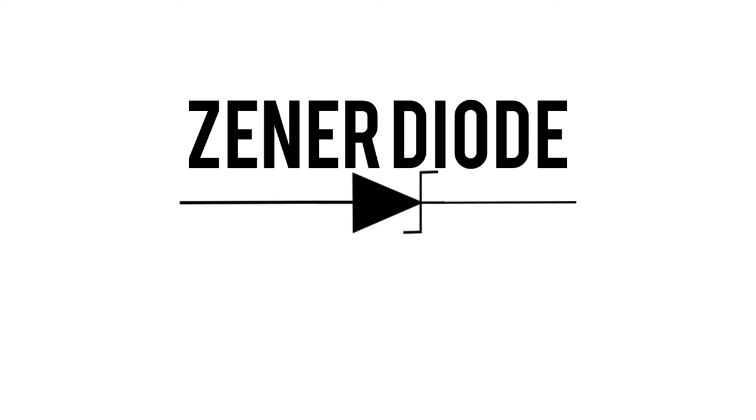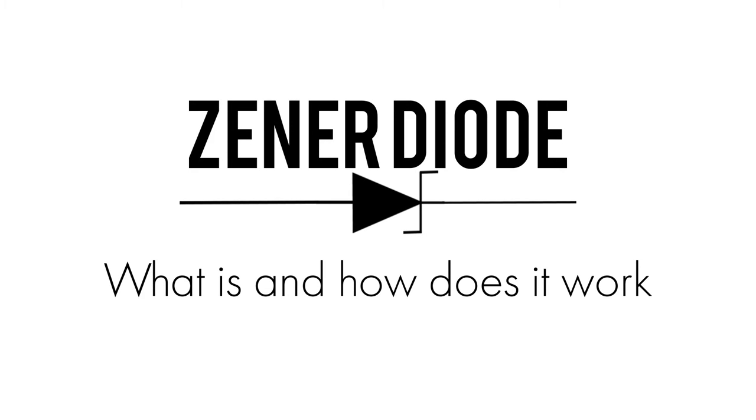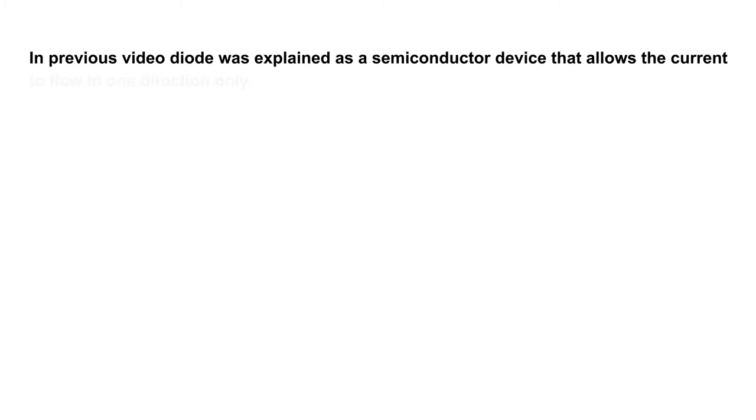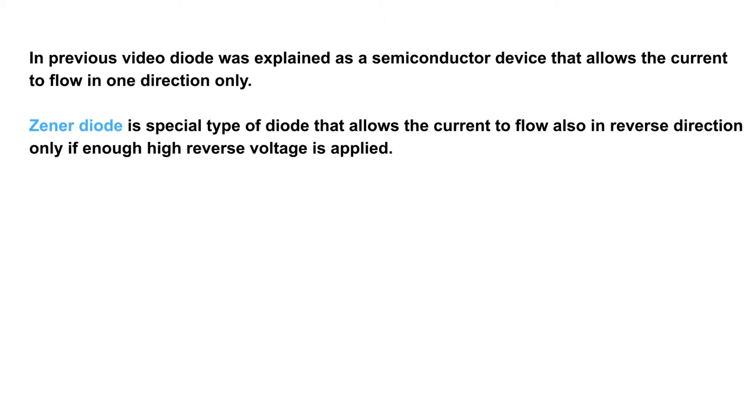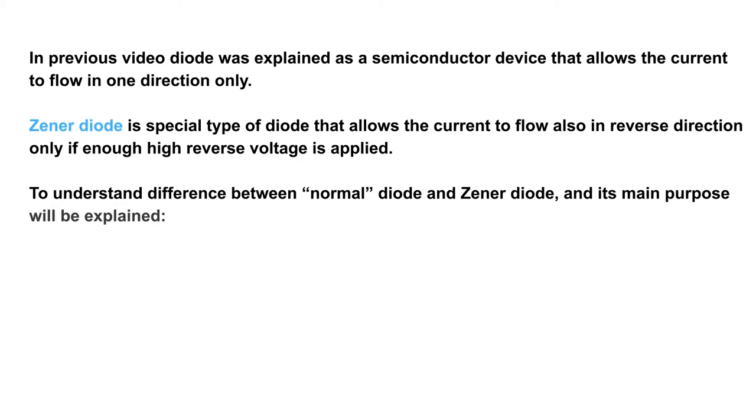What is Zener diode? Zener diode explained. In previous video diode was explained as a semiconductor device that allows the current to flow in one direction only. Zener diode is special type of diode that allows the current to flow also in reverse direction only if enough high reverse voltage is applied.